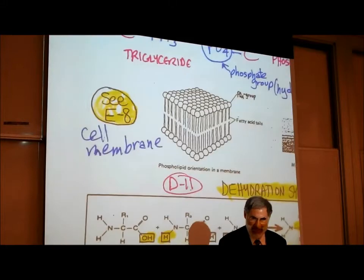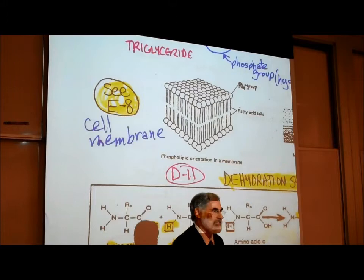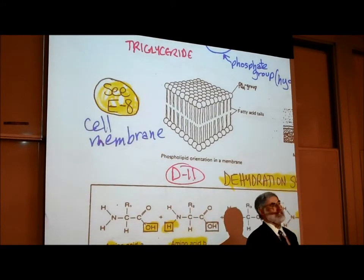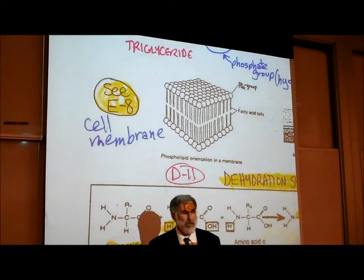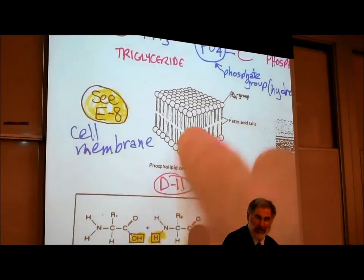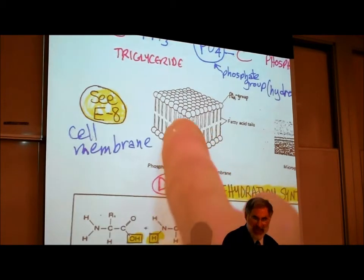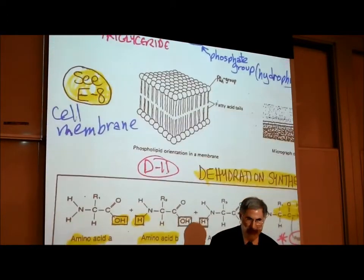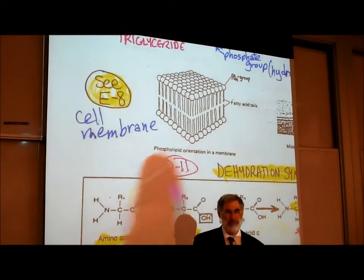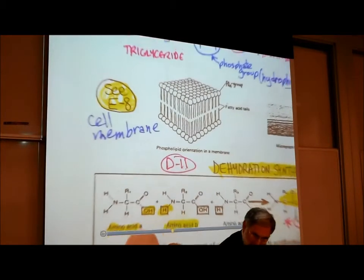The importance of phospholipids is that they make up cell membranes. The cell membrane is largely made up of a double layer of phospholipid molecules — you can see two layers of phospholipids, each made up of molecules that look like a balloon with two strings attached. We're going to have more to say about phospholipids when we get to cells and talk about cell membranes on page E8.